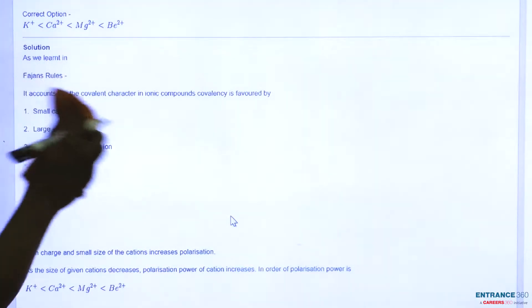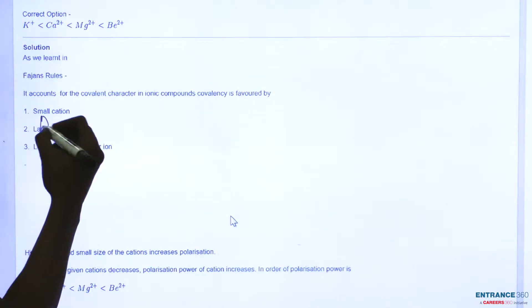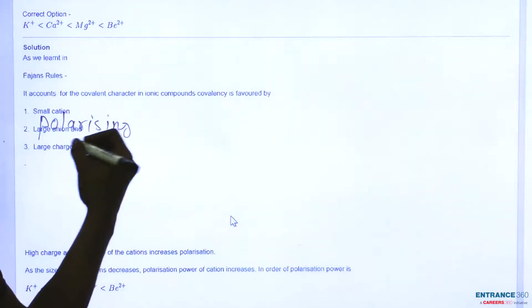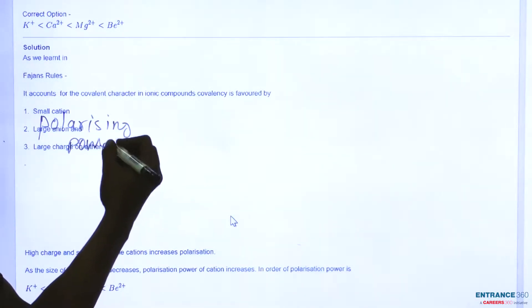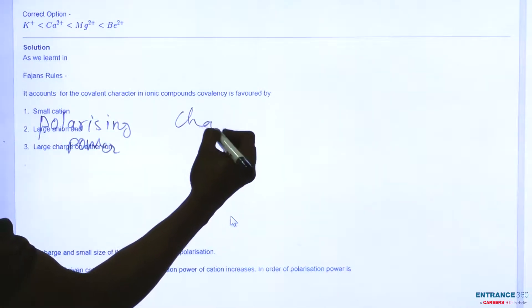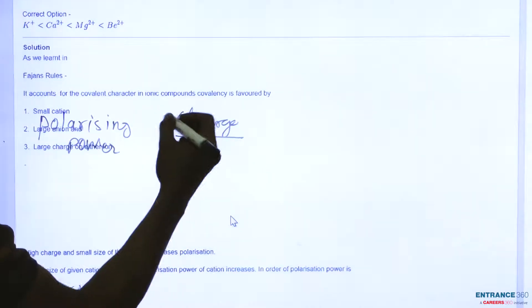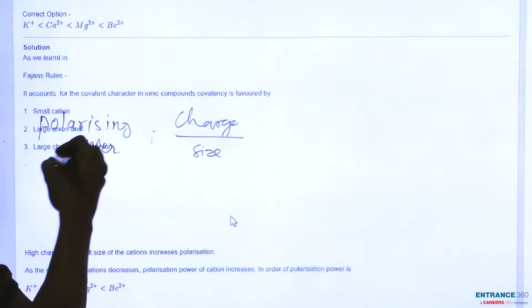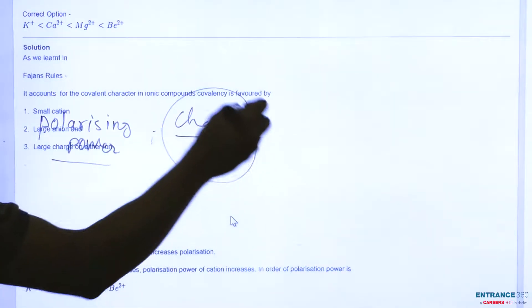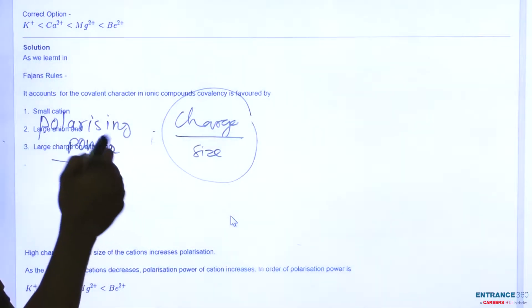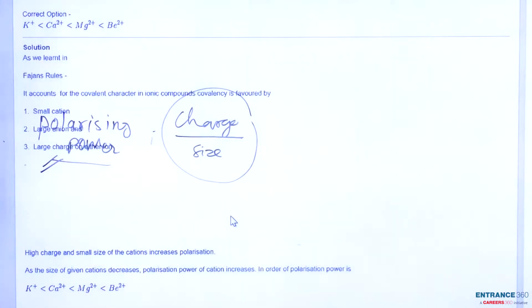In the question it was given that polarizing power can be calculated by charge by size ratio—size of the ion ratio. This has something to do with this ratio. Now we will calculate. The smaller will be this ratio, the more will be the polarizing power. So now we will check for each and every option.